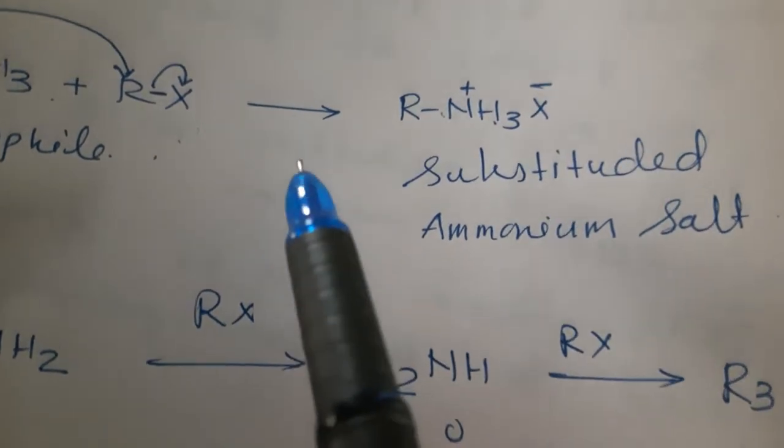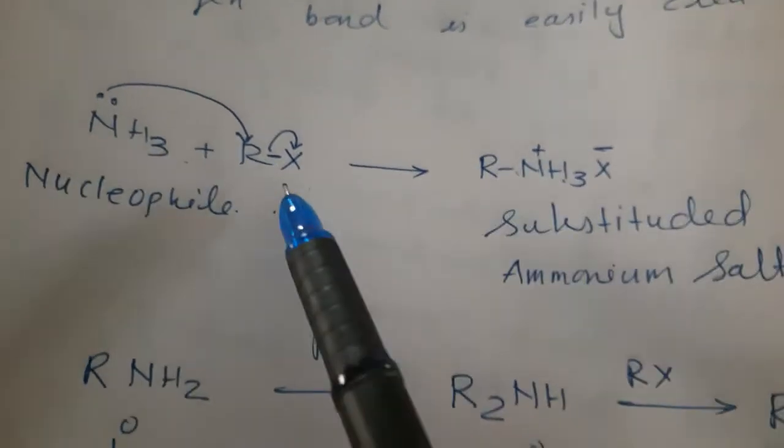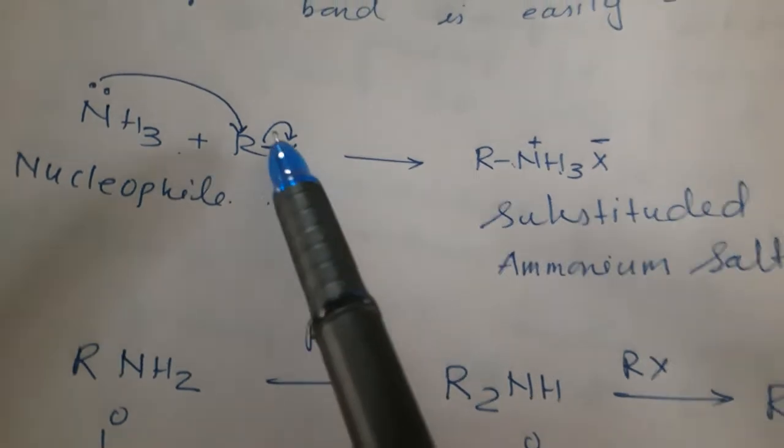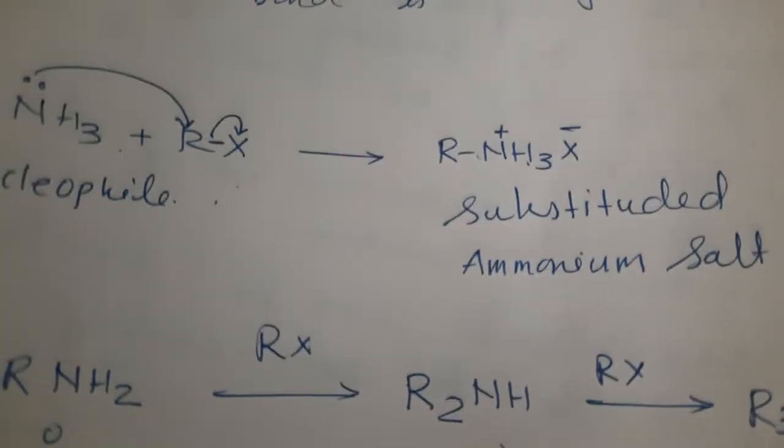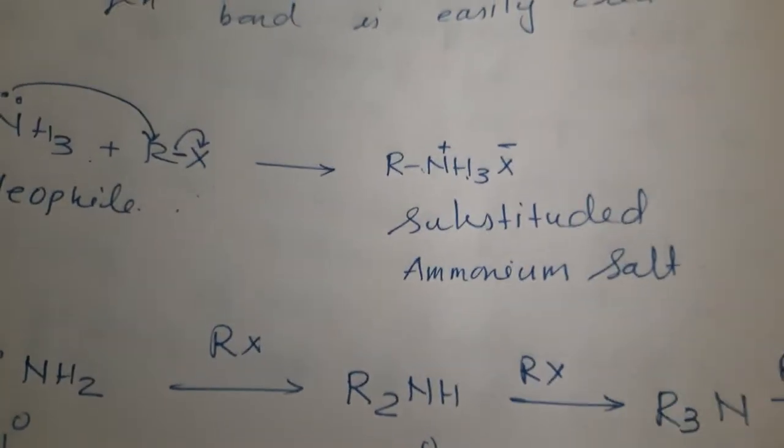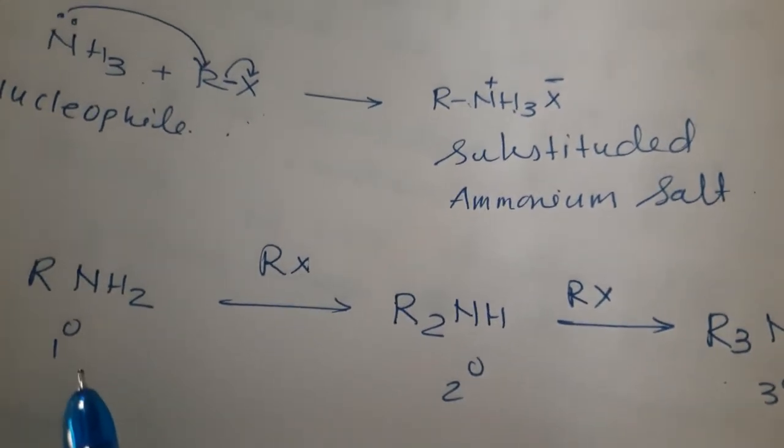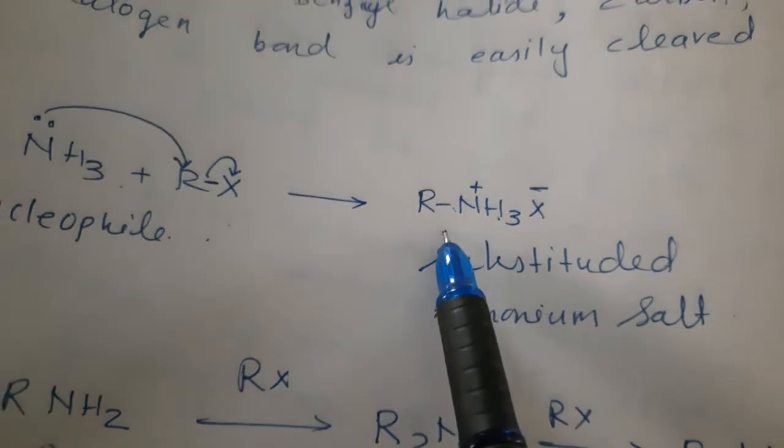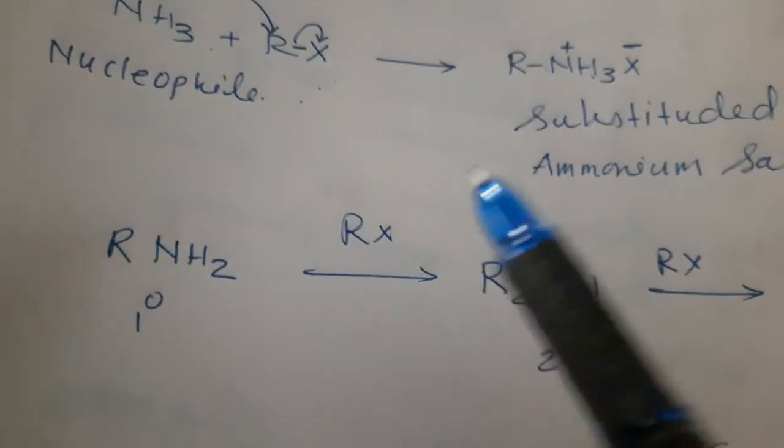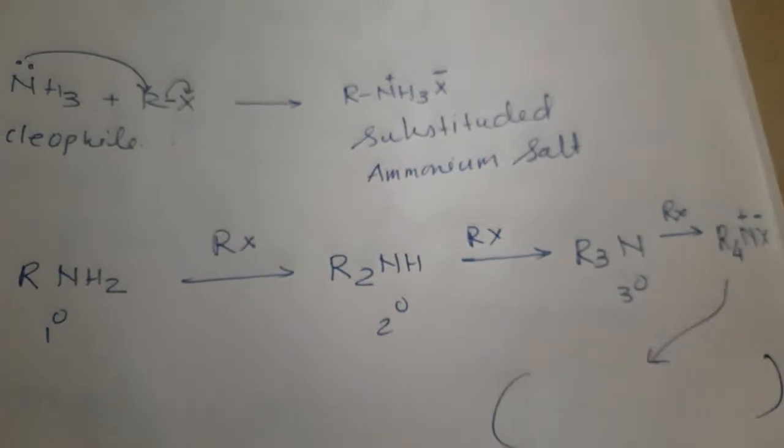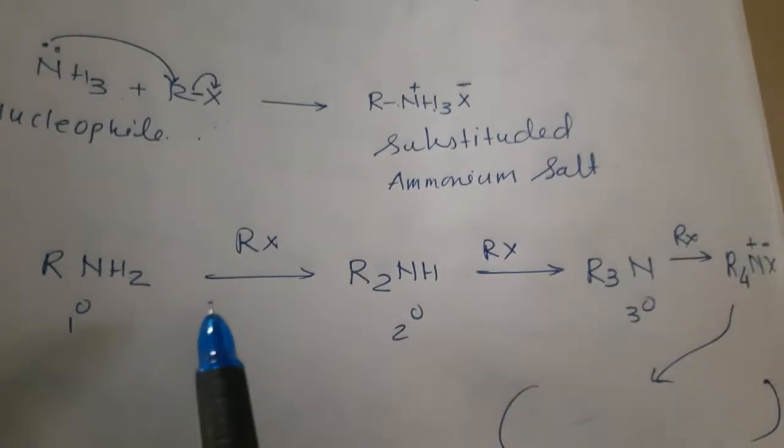When this halogen atom is replaced by NH2, this process of cleavage of C-X bond by ammonia molecule is known as ammonolysis. Because of ammonia, if cleavage is there, so it is known as ammonolysis. Because of ammonia, if cleavage of Rx bond is there, and it is carbon or C-X bond break, that is actually known as ammonolysis. So, we can see the example.